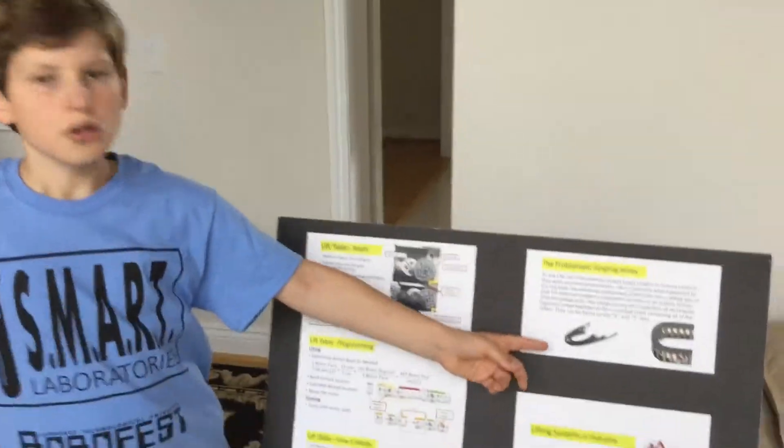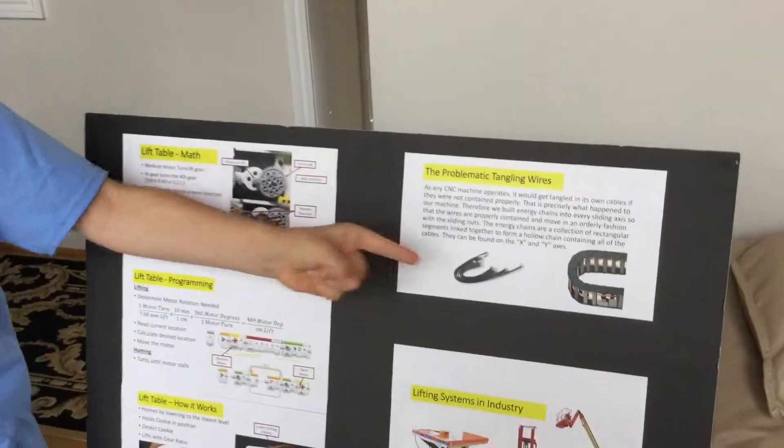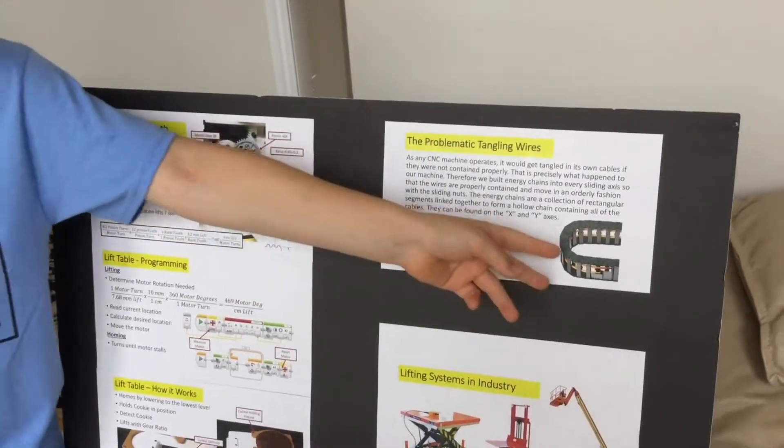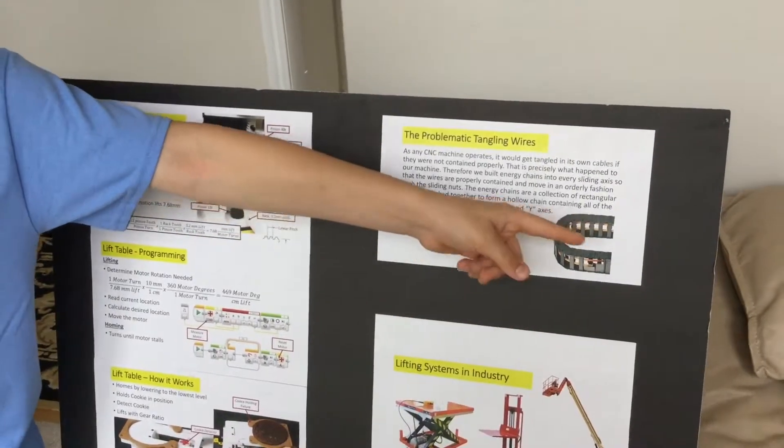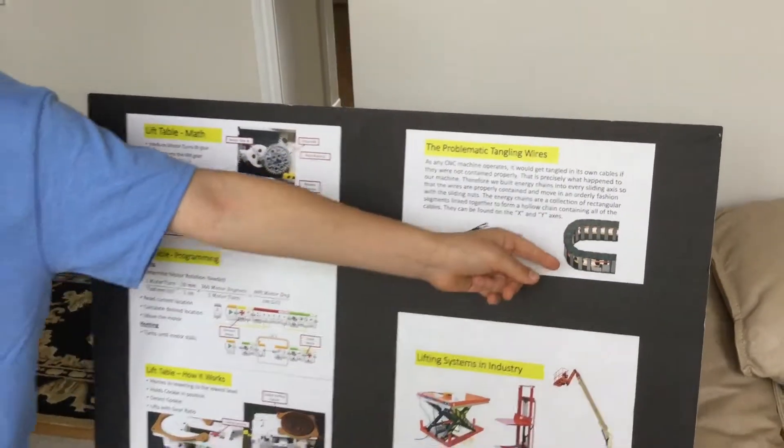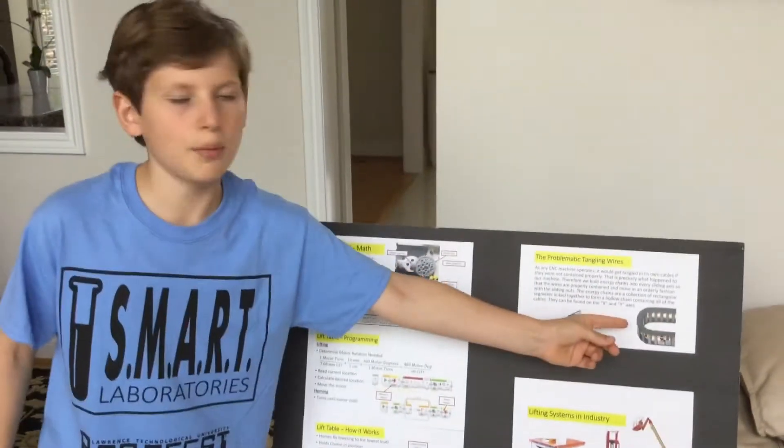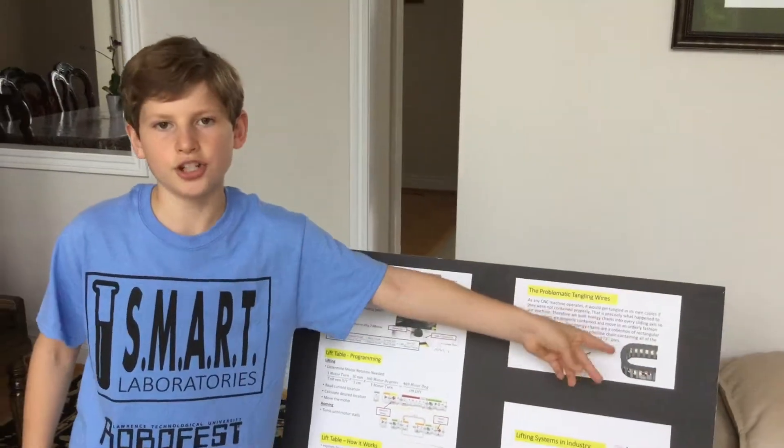Originally, in our machines, we had a bunch of tangling wires everywhere, but thanks to IGUS and their energy chain, we were able to solve that problem. The energy chain keeps the wires from getting tangled in the moving parts of the machine. Thanks for watching.